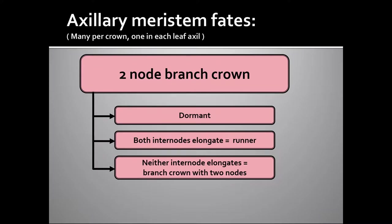It's what happens to this two-node branch crown that really helps us understand what's happening out in your strawberry field. This two-node branch crown itself can stay dormant. Both of the internodes on that two-node crown can elongate, and that forms a runner. Or neither internode elongates, and then we just say that it's a branch crown with two nodes. So it's dormant, it becomes a runner, or it remains as a branched crown.